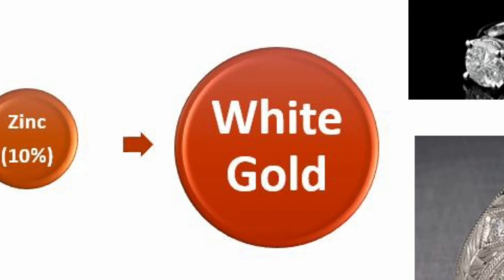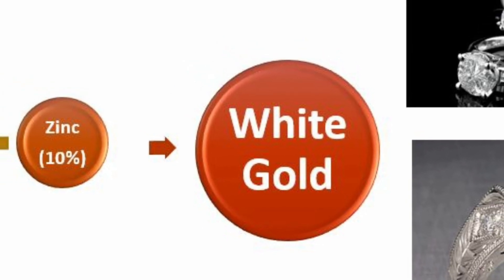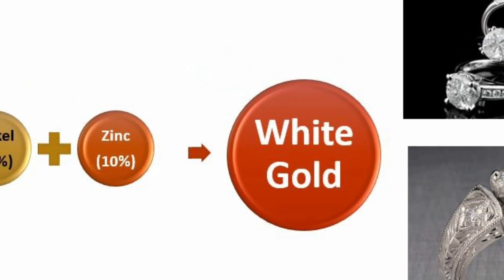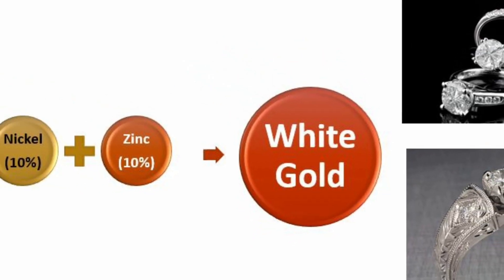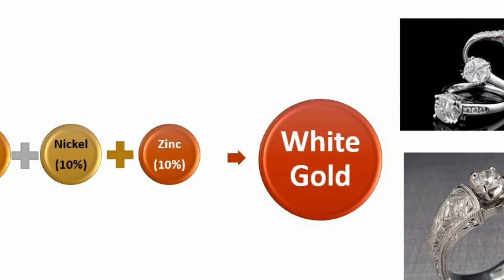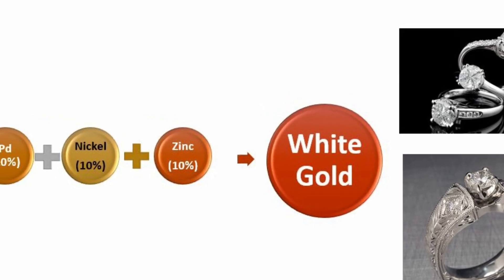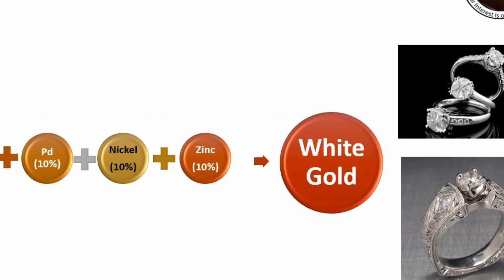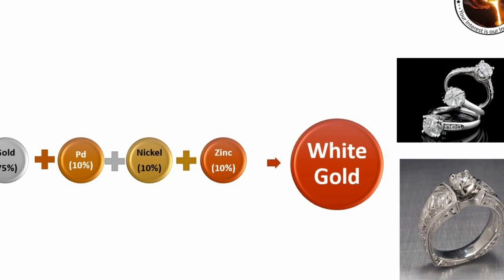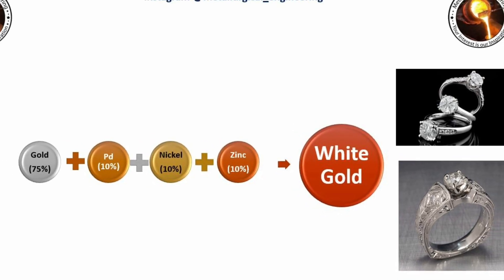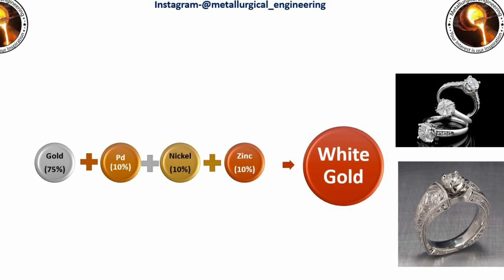Next is white gold. It is a gold-based alloy and palladium, nickel, and zinc are the main alloying elements. The composition of white gold is 75 percent gold, 10 percent palladium, 10 percent nickel, and 5 percent zinc. It is used in jewelry.